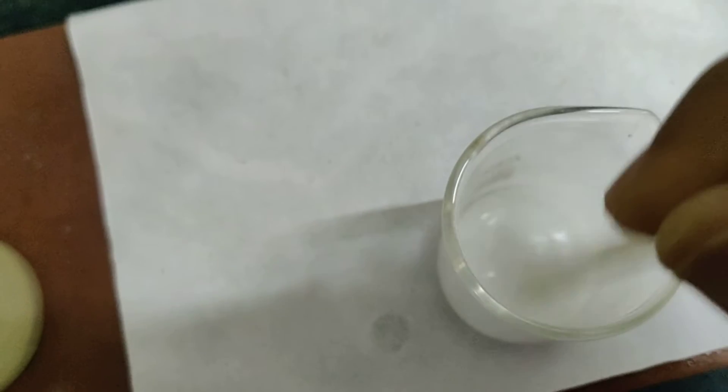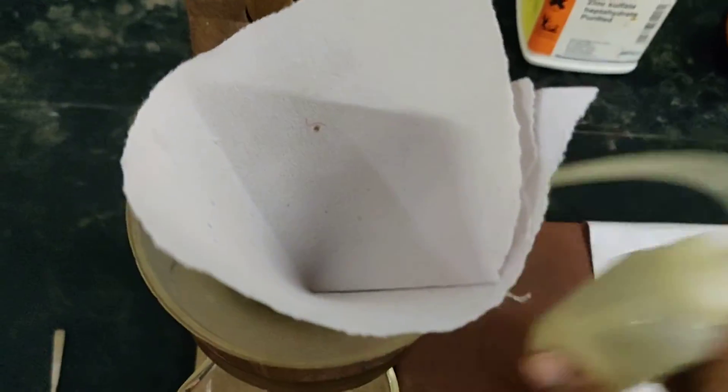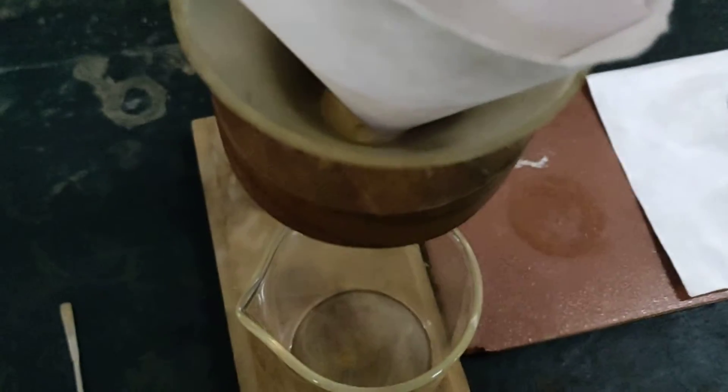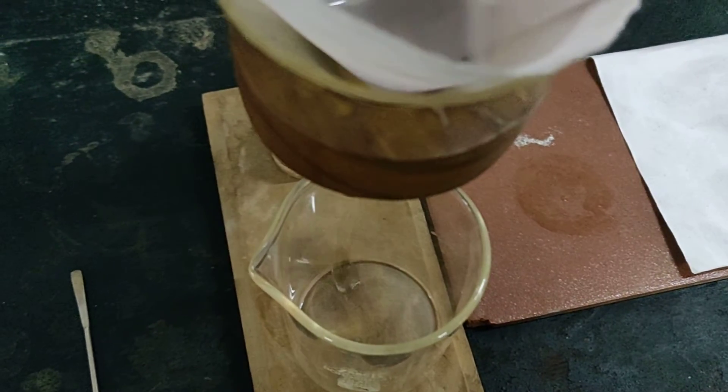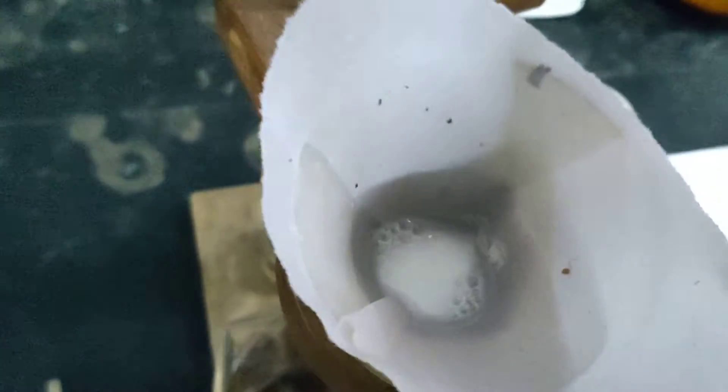Now we are supposed to filter this. For that I have kept the filtration stand ready. We have to put water and wet it first. The filter paper needs to be wetted. And now transfer the precipitate - it is complex - and filter it.